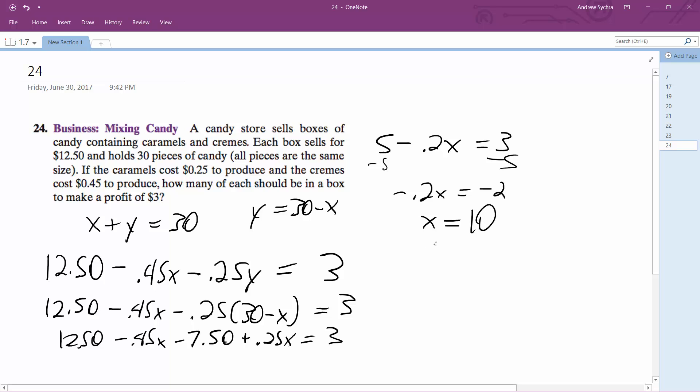So that's 10, that means y is going to be equal to 20, but let's check and figure this out. So 10 times 0.45, because that's what I have x set to, and then y plus 20 times 0.25.